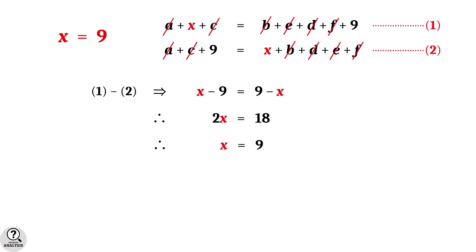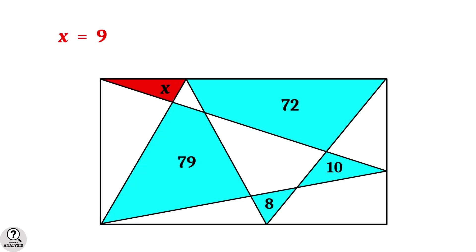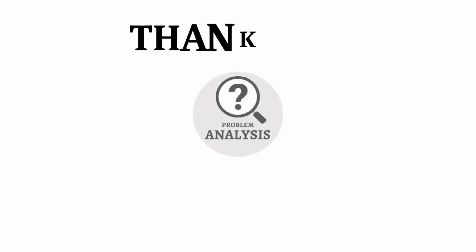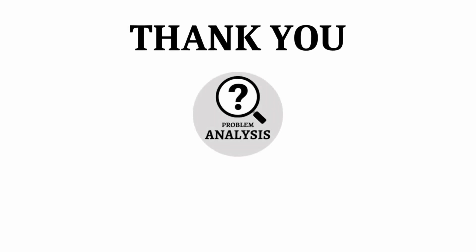That means the area of the missing red triangle is 9 square units — and that is the solution we were looking for. That's all about this video. My Gmail and Instagram IDs are given in the description, so if you have any queries, please feel free to contact. Thank you so much for watching — see you in the next video with another interesting problem.